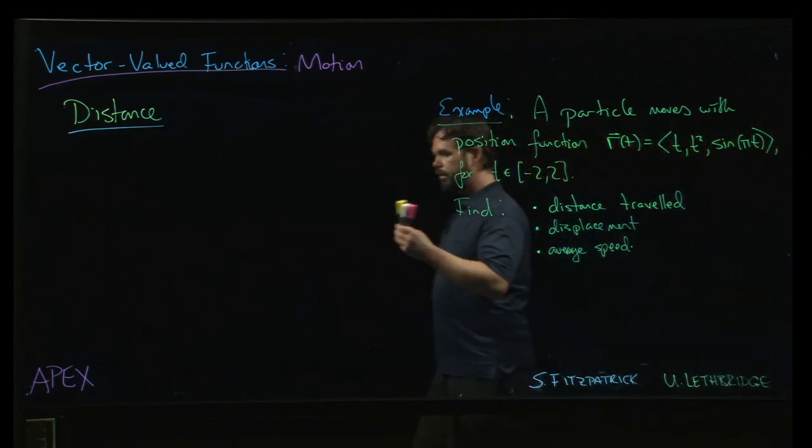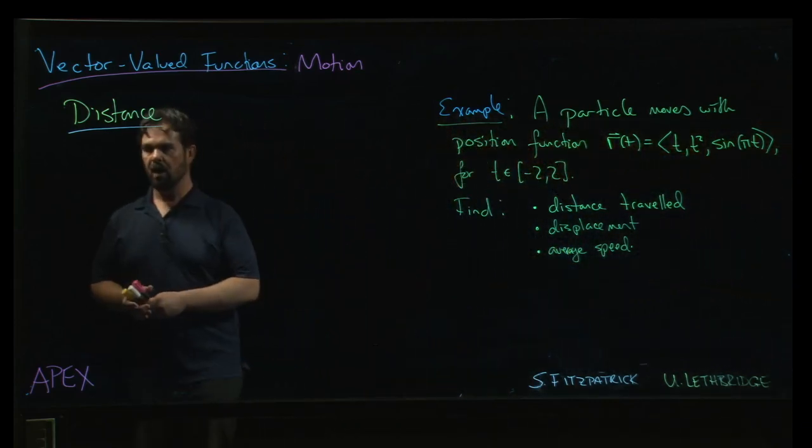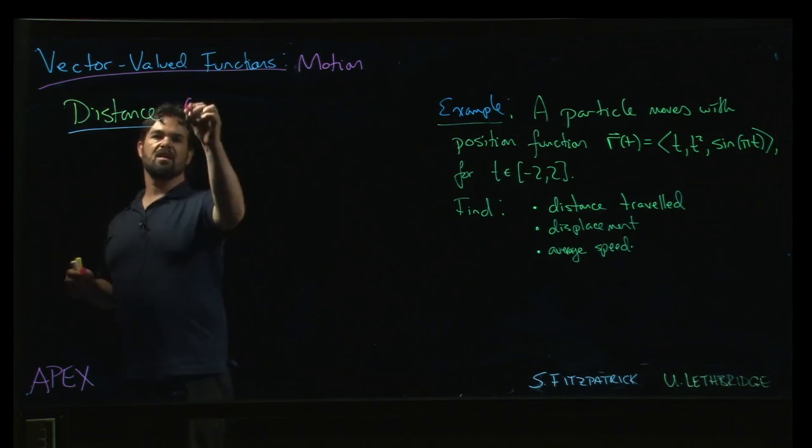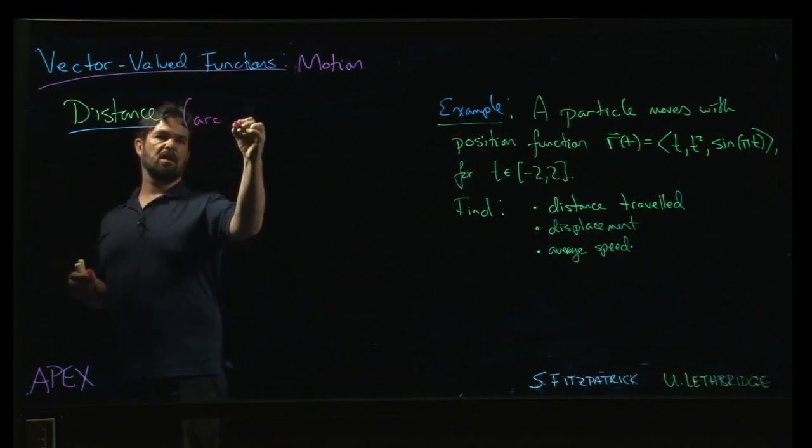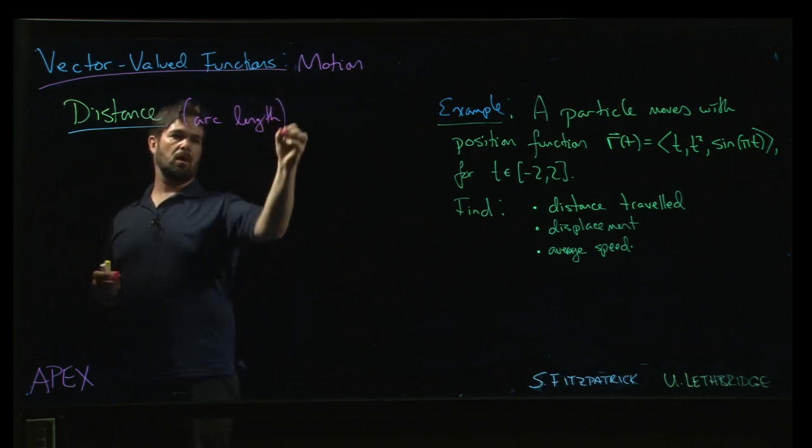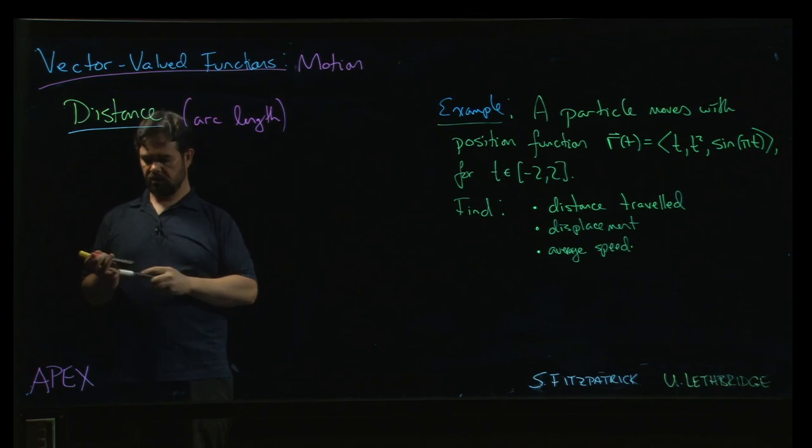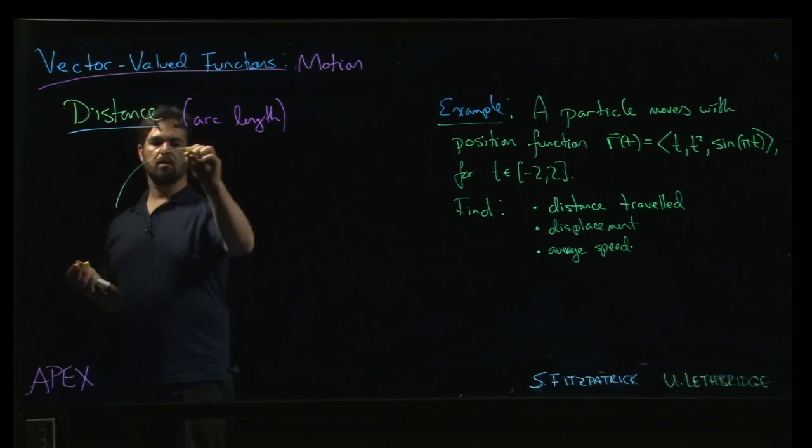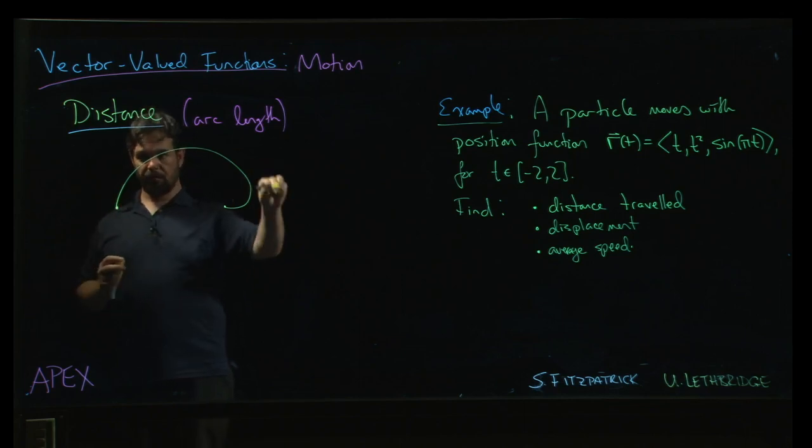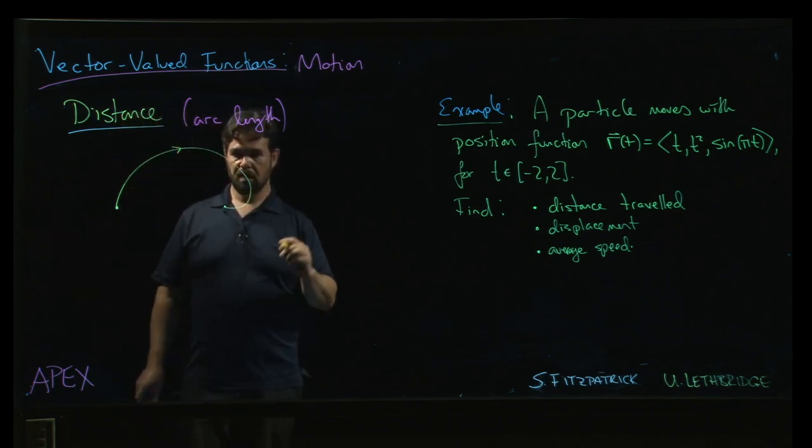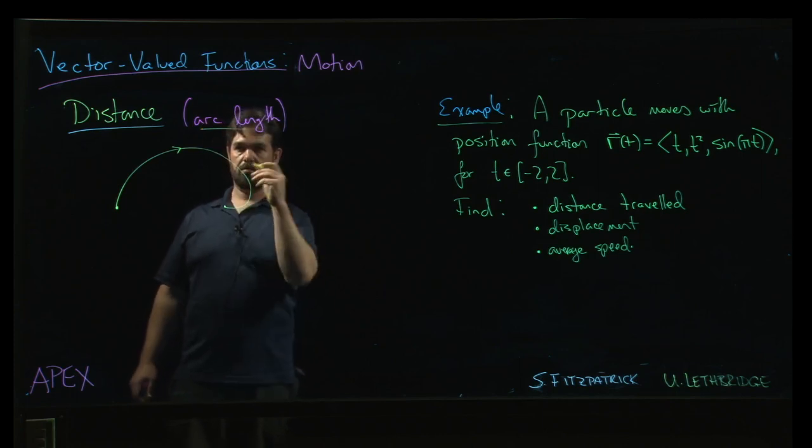The last topic for this section is distance. Now really what we're talking about here is simply arc length. The idea is that you have an object which travels over some path. So let's say the path is there. There's my path, and I want to know how far the object traveled as it moved along this path. Well, that's the same as asking for the length of the path, the length of the curve, hence arc length.